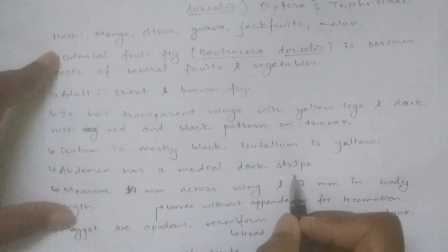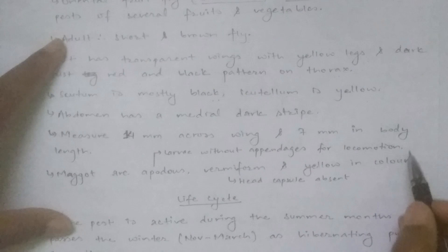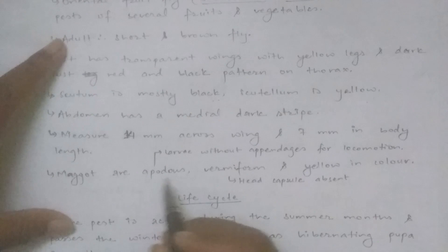The abdomen has a medial dark stripe. The adult measures 14 mm across the wing and 7 mm in body length.